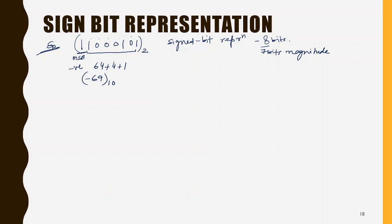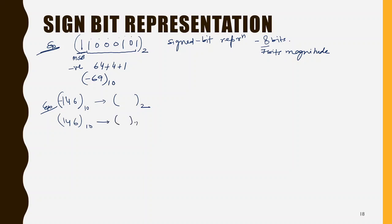Now let us do an example where we convert minus 146 as a decimal number into binary. Step one: we will first convert 146 into binary in signed bit representation. Because with 8 bits the maximum value can be 2 raised to the power 6, which is 64, this value cannot fit in 8 bits, so we will use 16 bits.